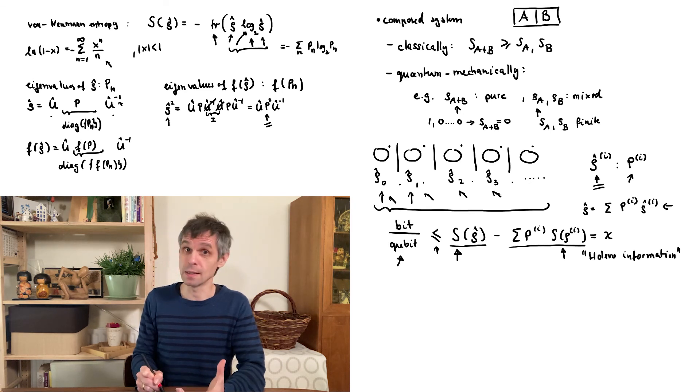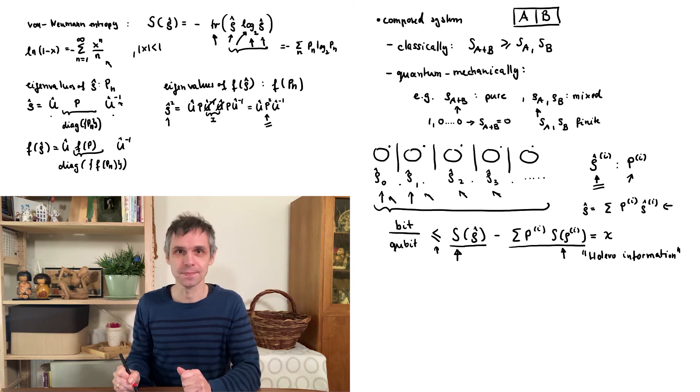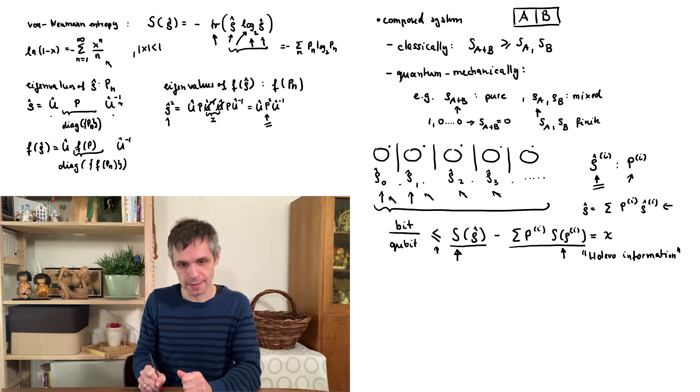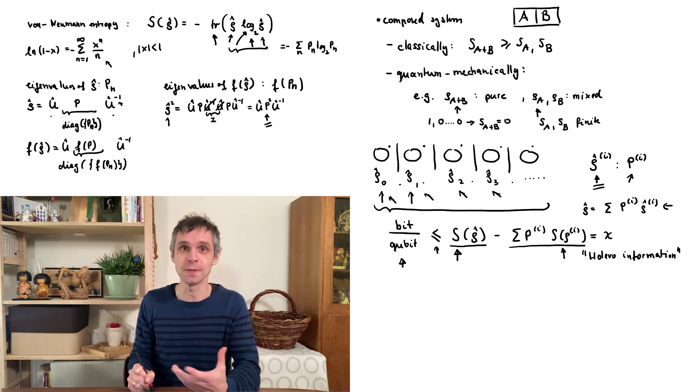So this tells us that within a single qubit, we cannot store more than a single bit of information. The ideal case is when we only send qubits in pure states and indeed make equal use of only two orthogonal states, such as the states in the computational basis. So in that case, we can send one bit of information for any physical quantum bit involved in this signal.